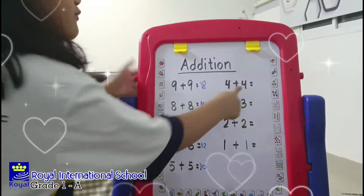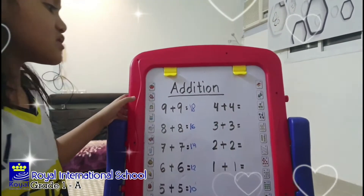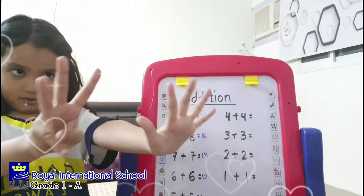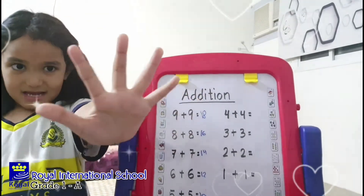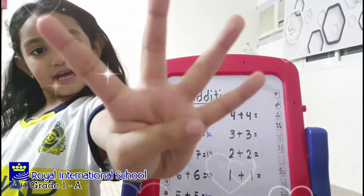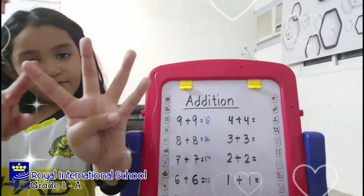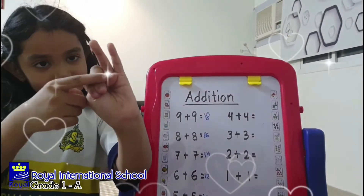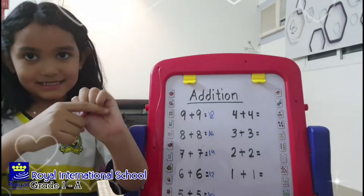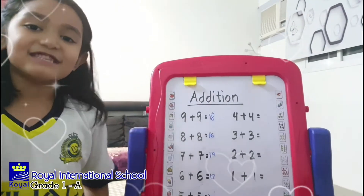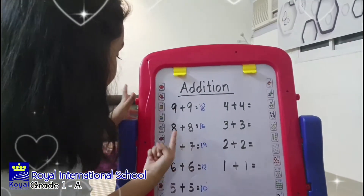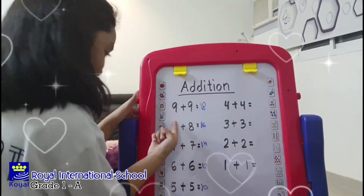4 plus 4. I have 4 in my hand. After 4: 5, 6, 7, 8. Eight is easy. You write like this.